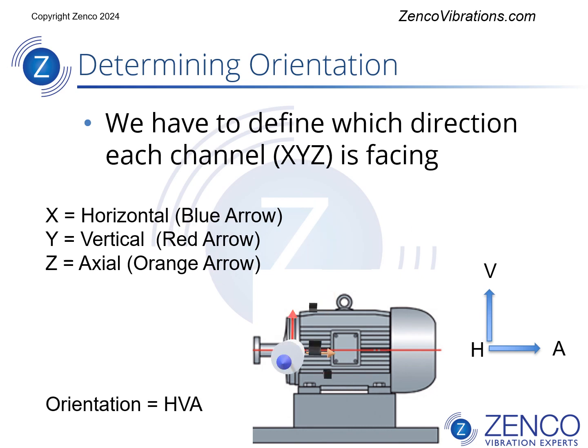Now we have the sensor mounted on the side of the machine, and that of course changes the orientation. Now the X is horizontal — that's the blue arrow — the Y is vertical, and the Z is axial.